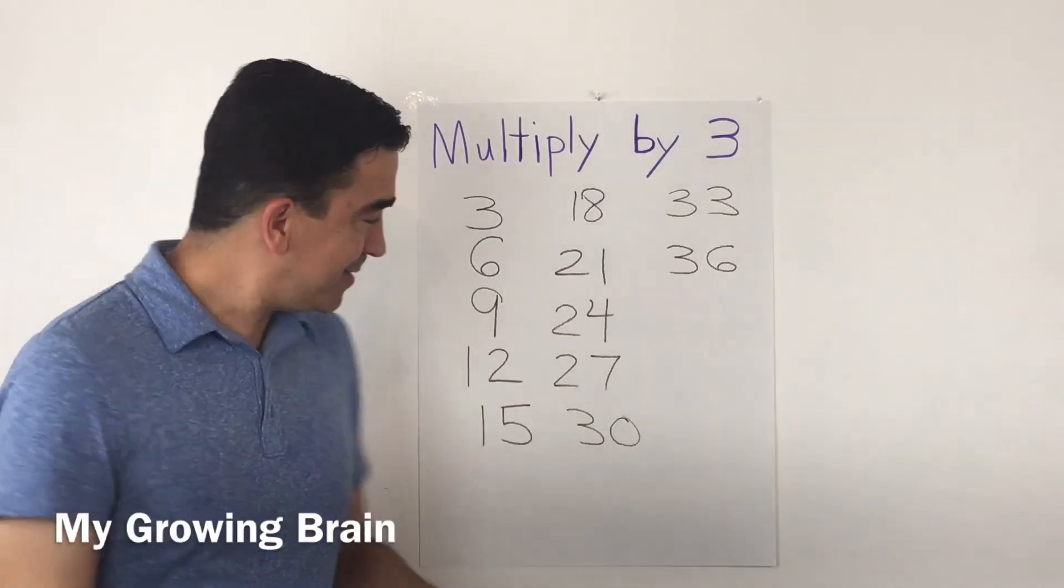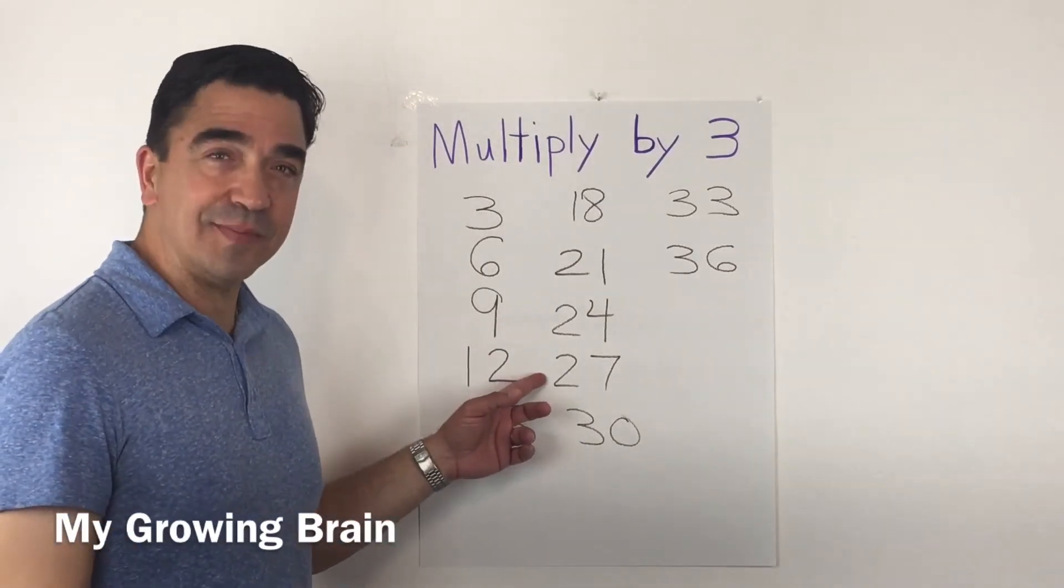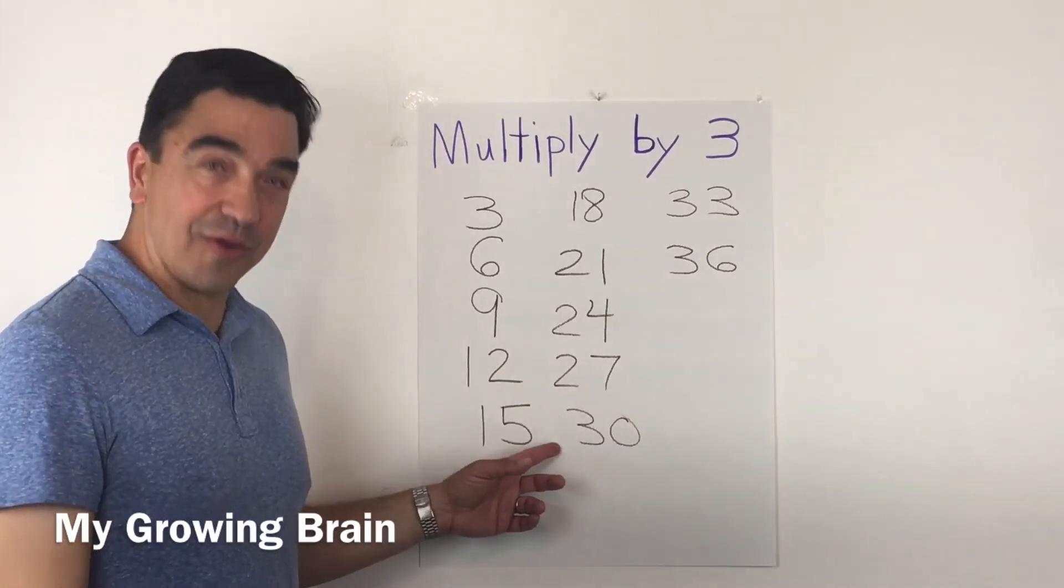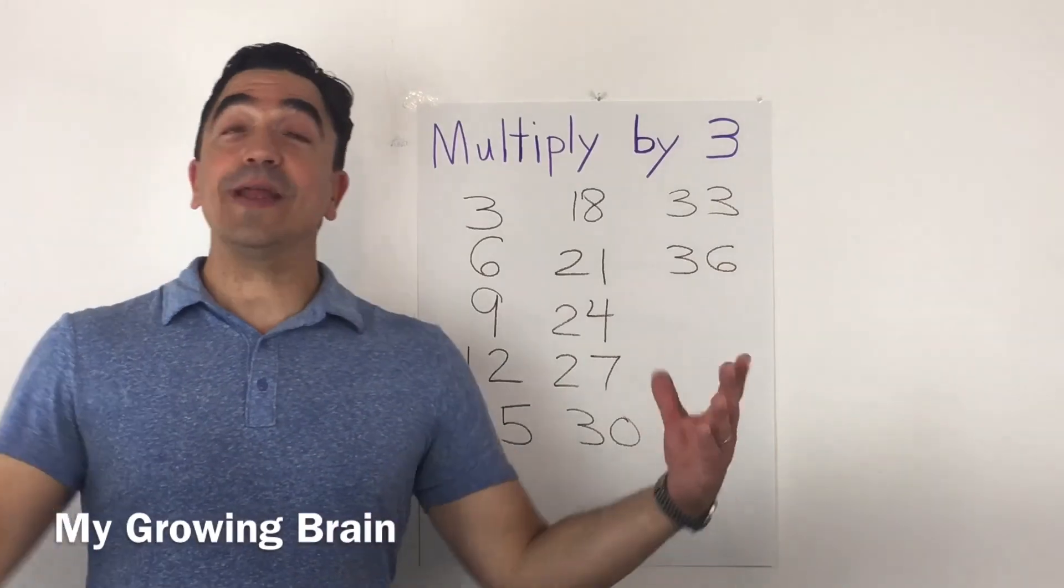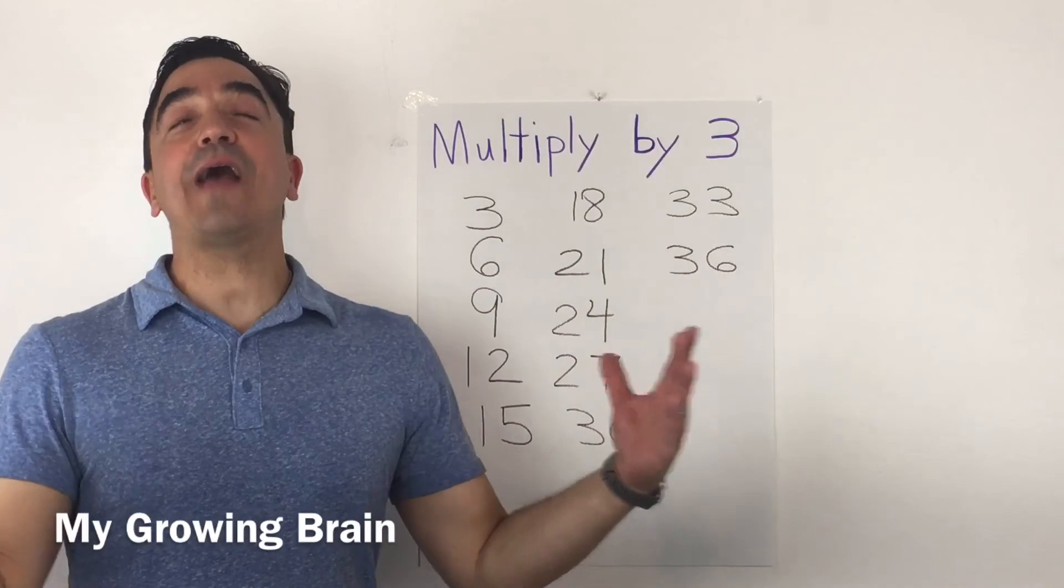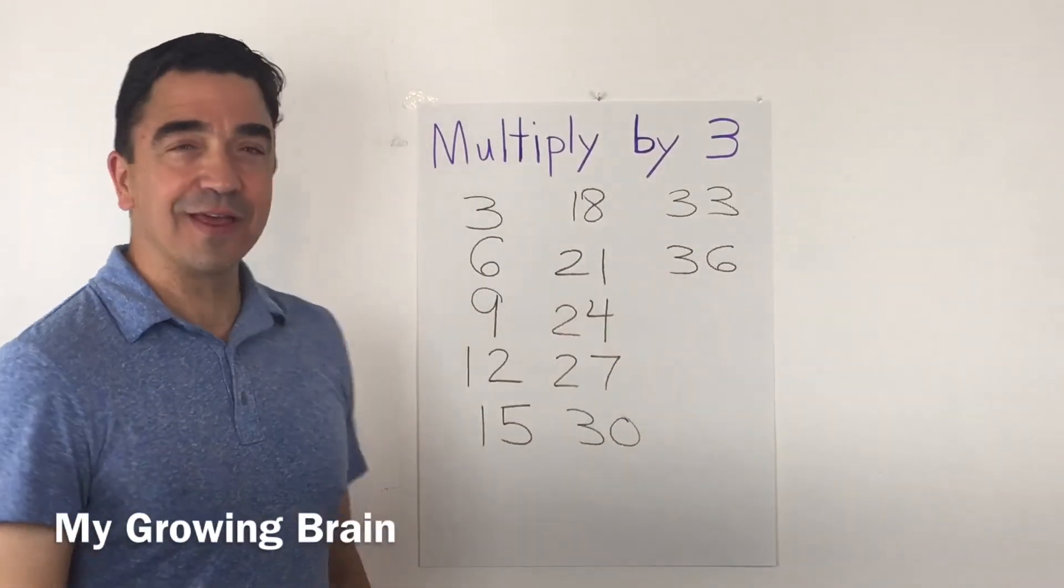Three times nine, 27. Three times ten, 30. Three times eleven, 33. And three times twelve, 36.